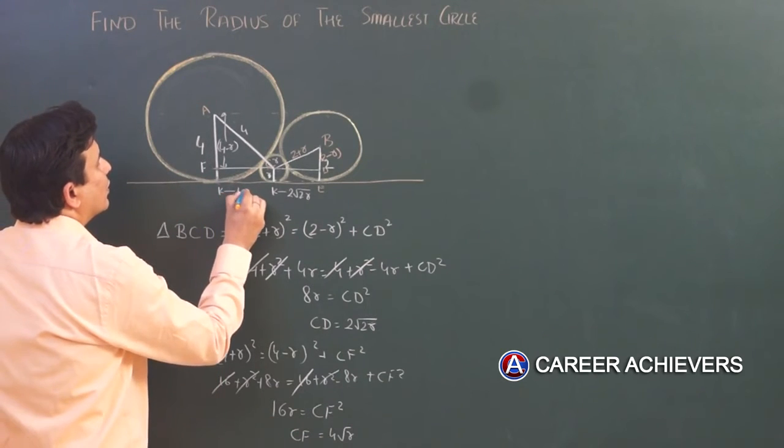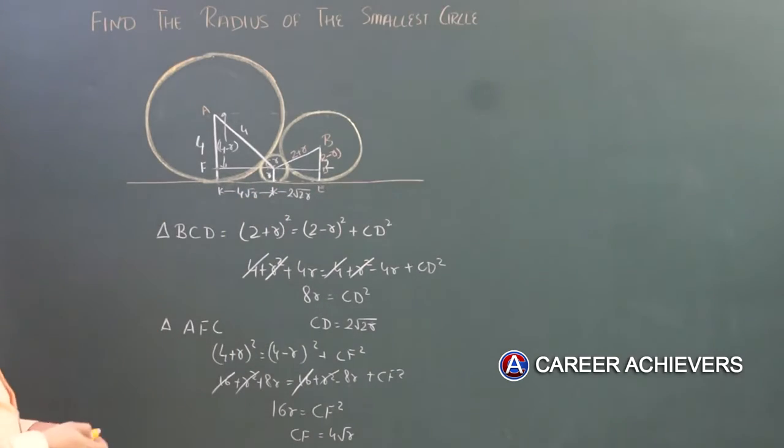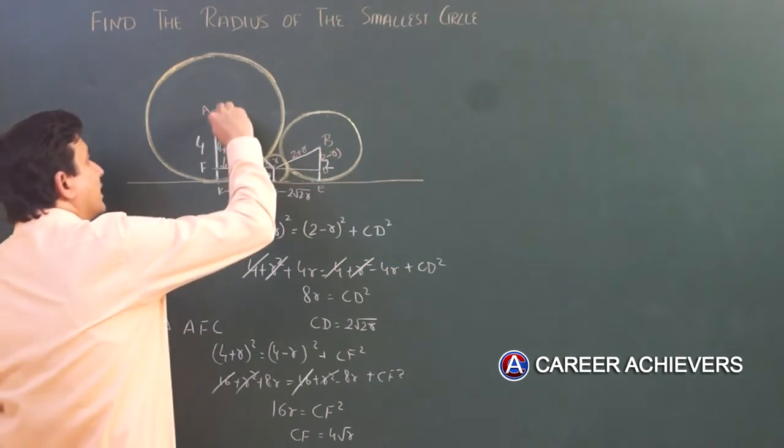This implies CF is equals to 4√R. You got this as 4√R.